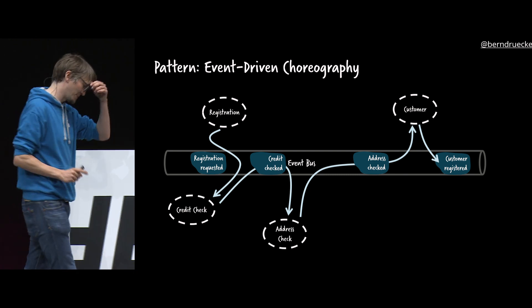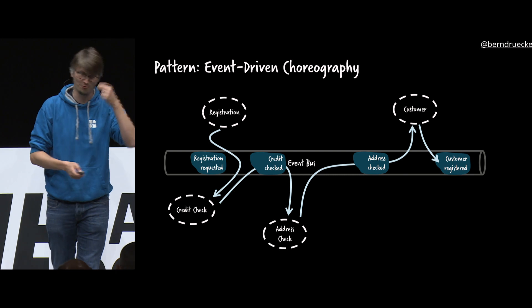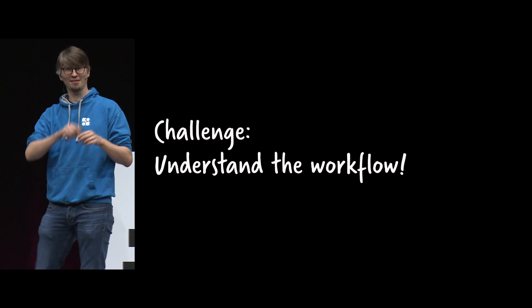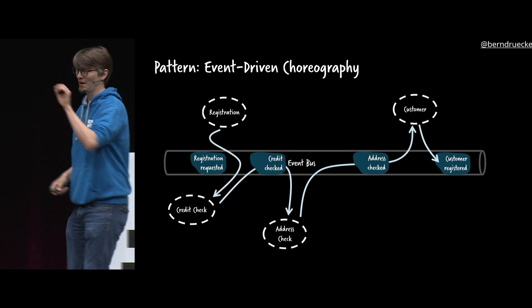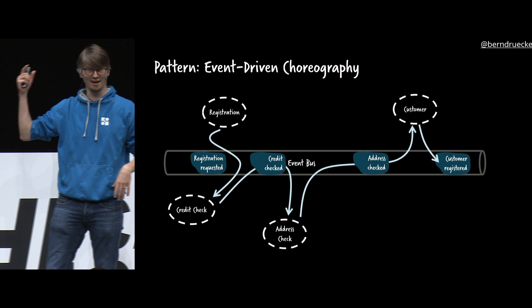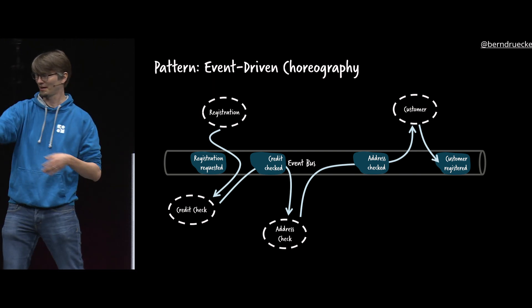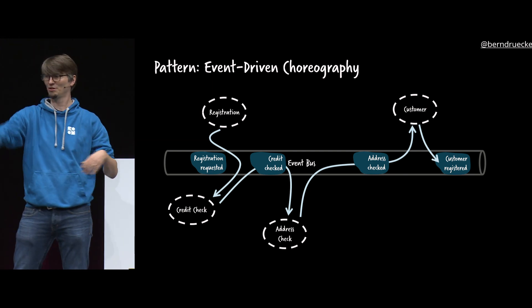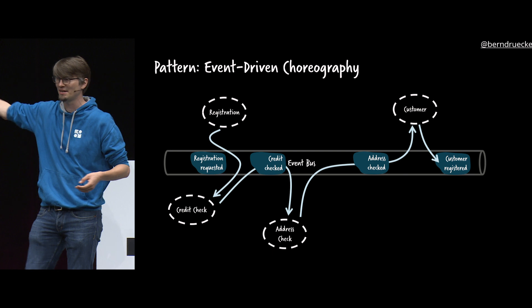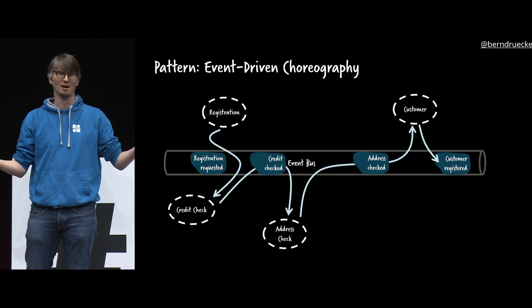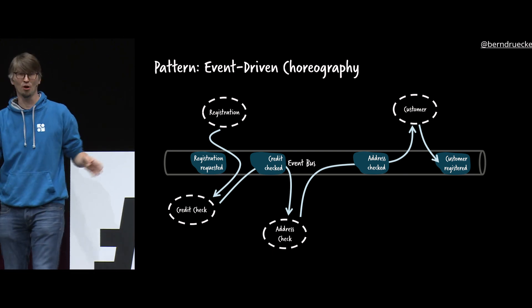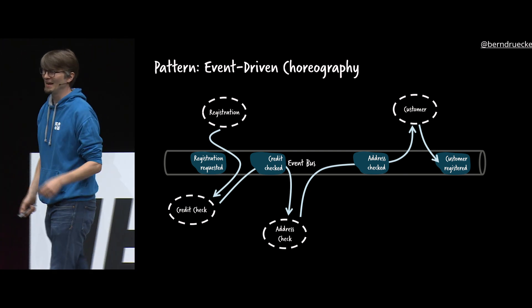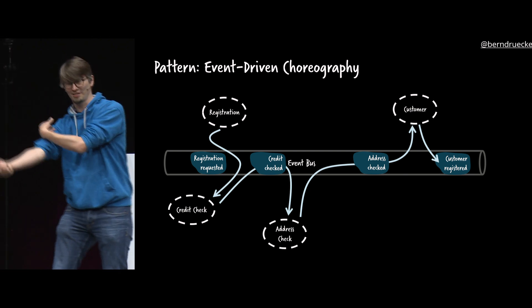So we need that chain in order to happen. And there are a couple of problems with this architecture, but let's focus on the first and most obvious one. It's hard to understand that workflow which is going on. If you look at the system, not on that slide, but in the real world, you normally go to one team like the credit check and you're basically in that box looking out and you just see I'm waiting for registration requested and I'm emitting credit checked. I have no idea what happens around me. So in that whole picture, there's nobody caring about that end-to-end workflow.